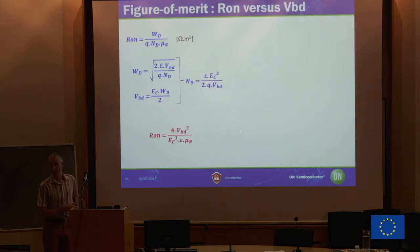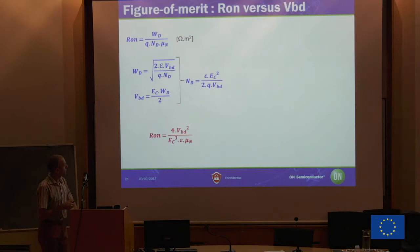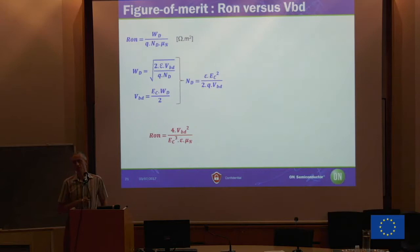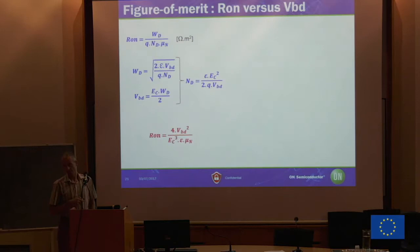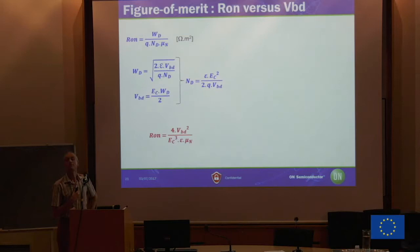The equation says that if you want to make a device with a given breakdown voltage — which is set by your application — you want resistance as low as possible, meaning you want this denominator term as high as possible. Which material parameter is most important? The critical field — because it's to the power of 3. So you're looking for a material with a high critical field. Critical field is linked to bandgap, because it's a measure of how strongly electrons are bound to the structure.